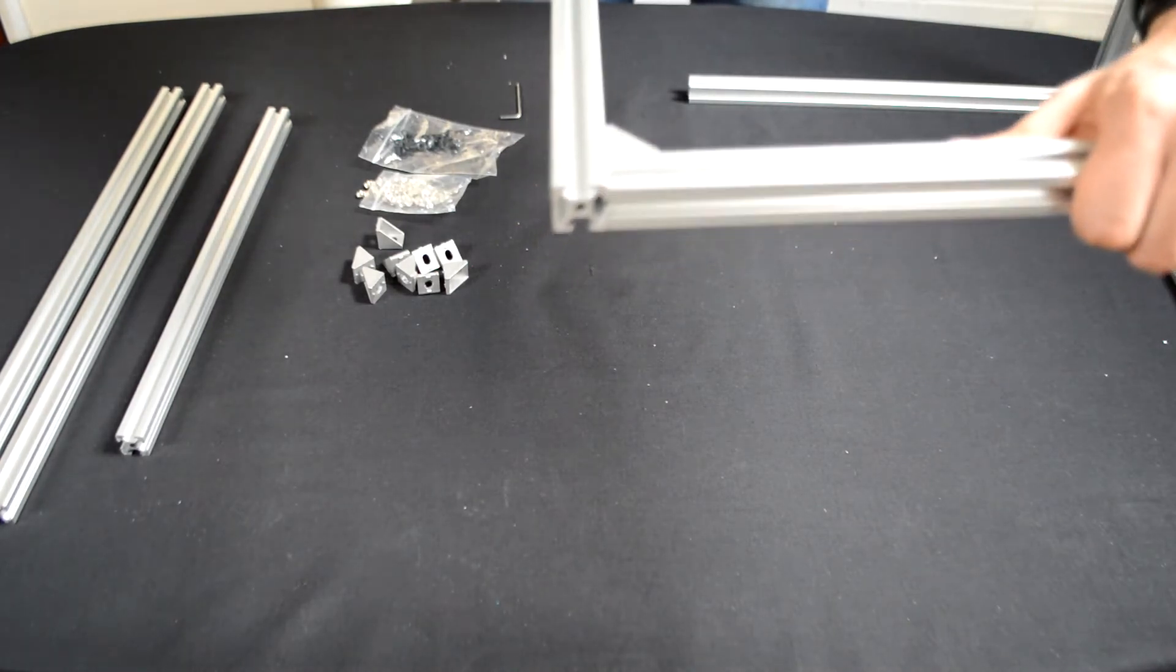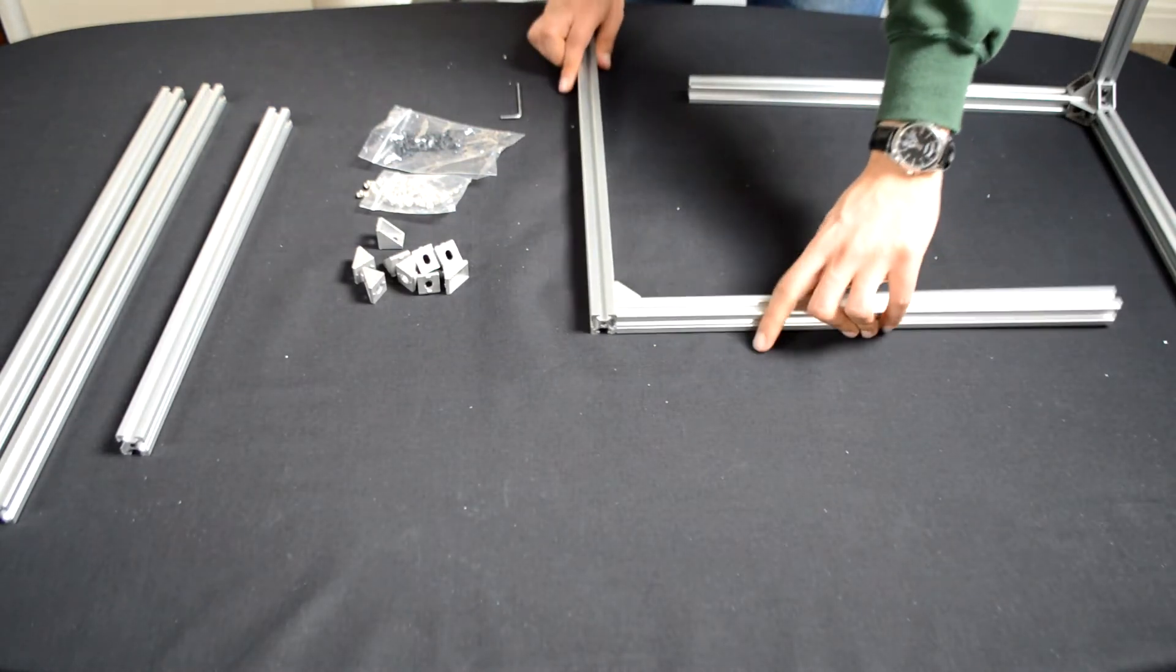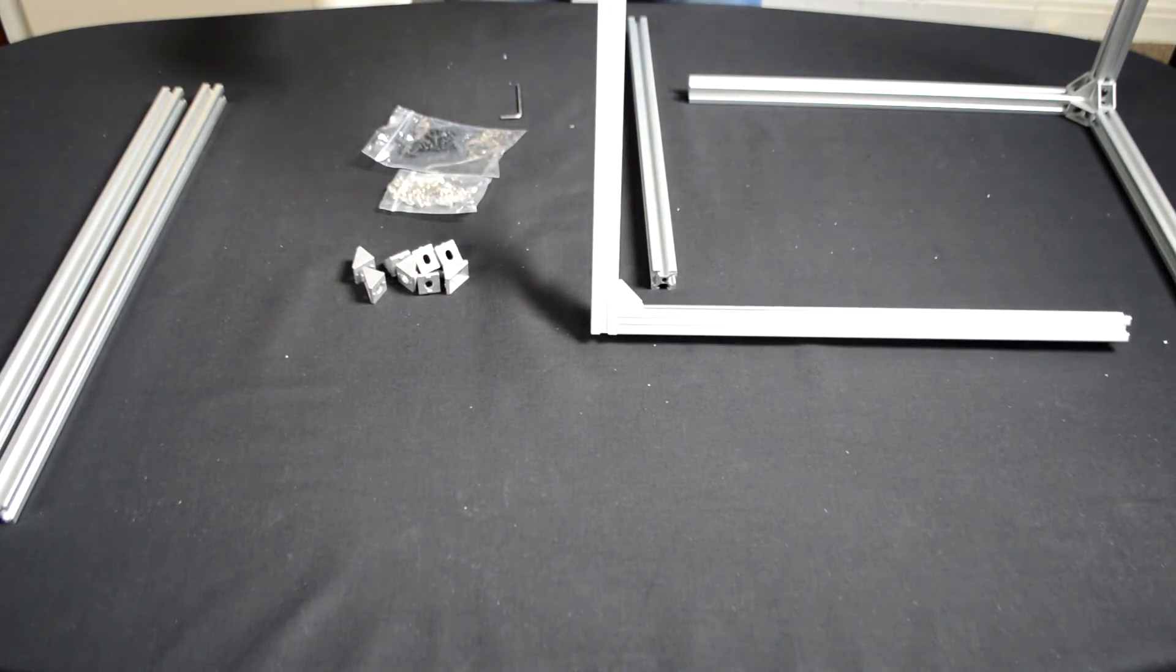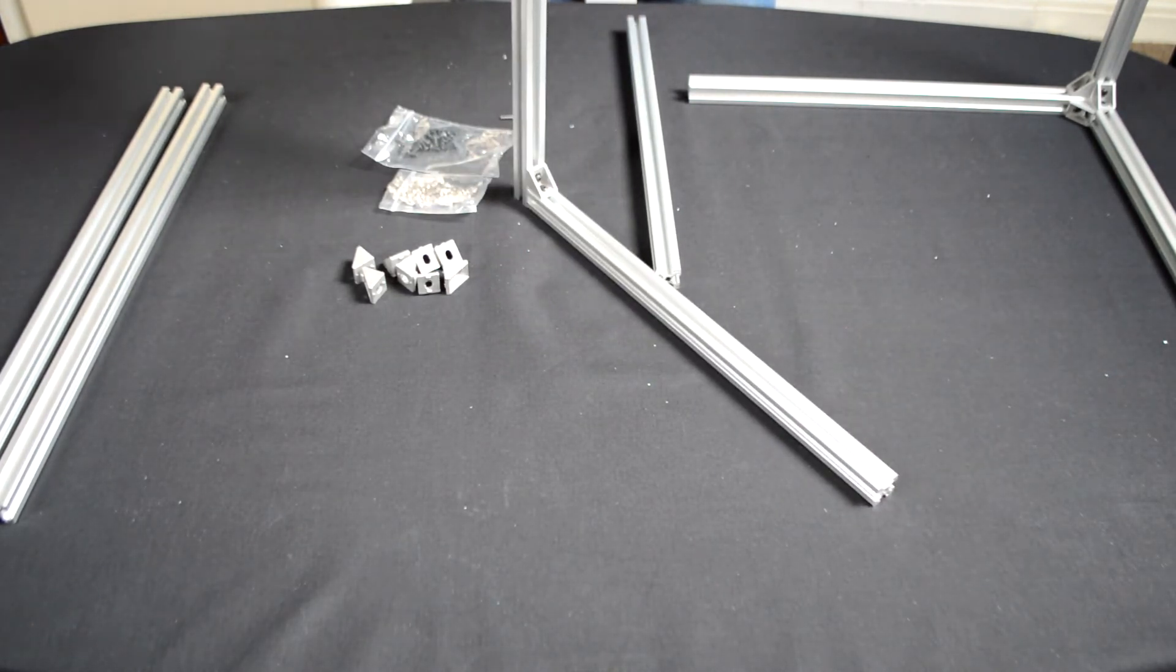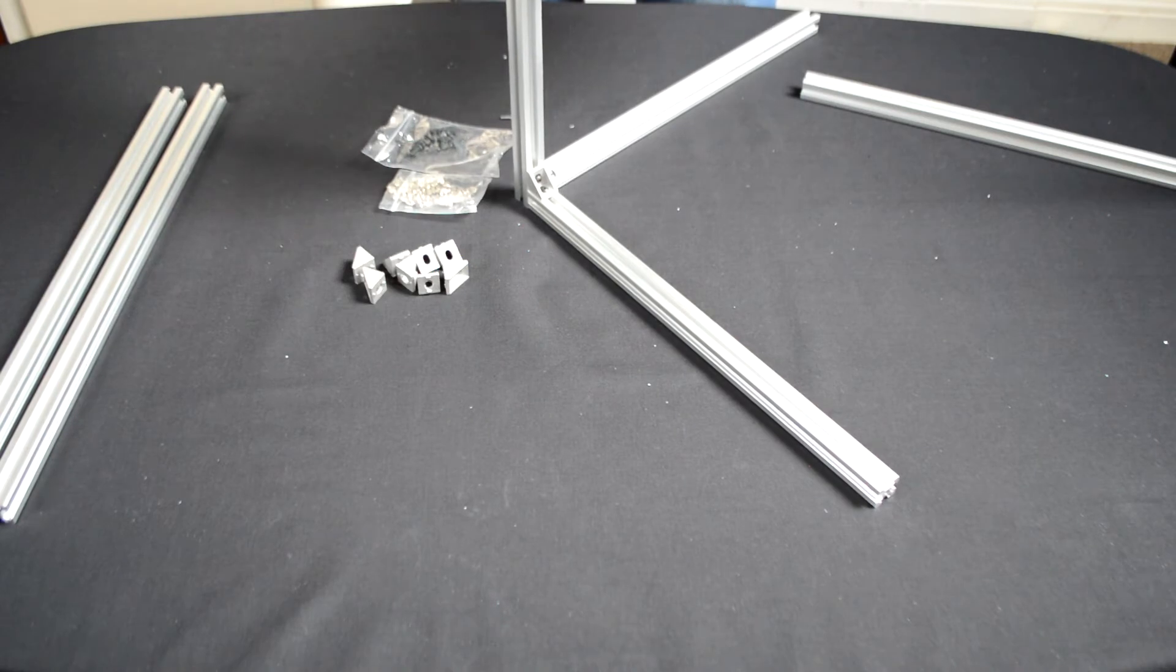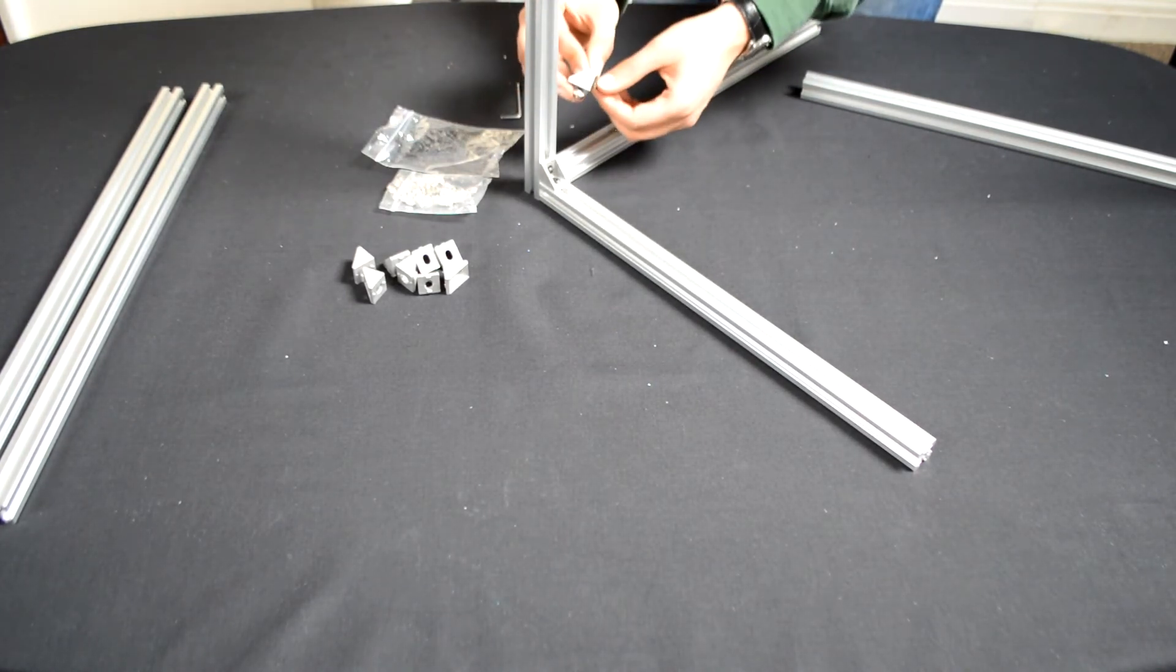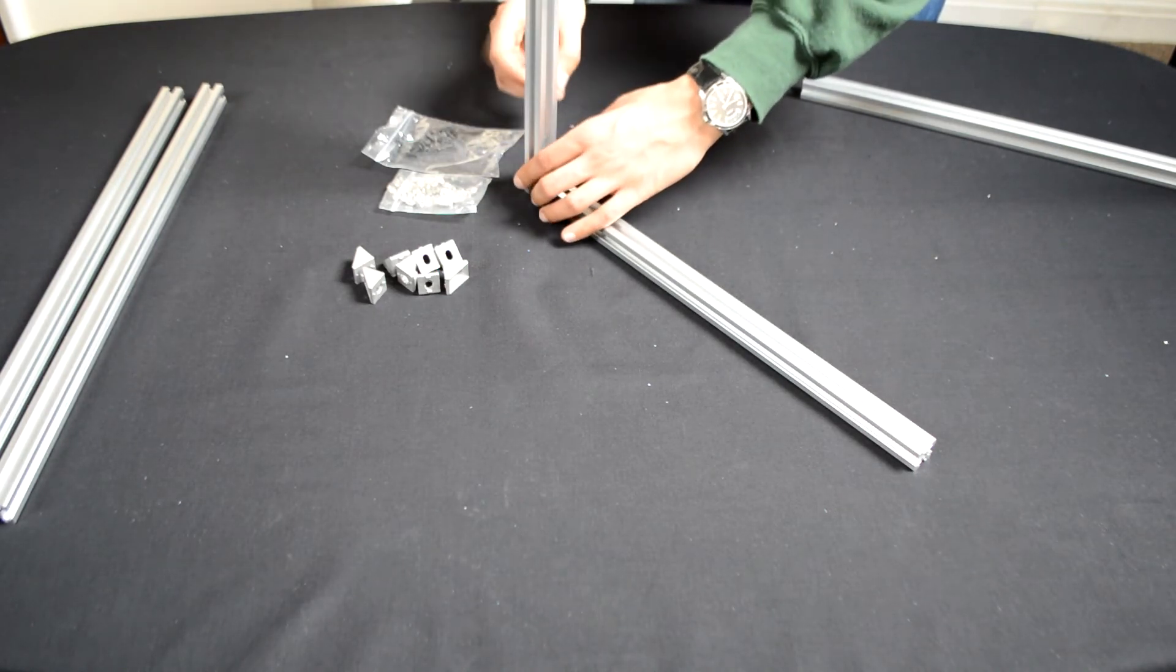So as you can see you want to get that flush like that and then you want to do that again with another 400mm extrusion. And make sure you orientate everything correctly so you want the 500mm extrusion to be standing up and then the 400mm extrusion to make a 90 degree angle like this. And then you just slide this in and tighten it down.